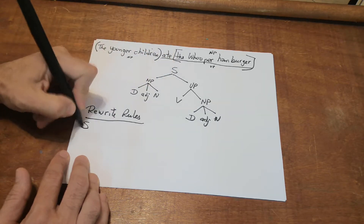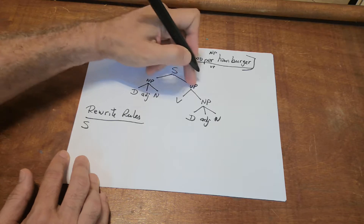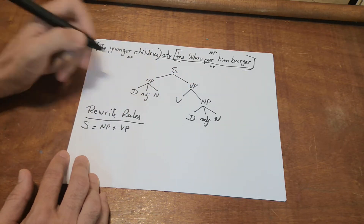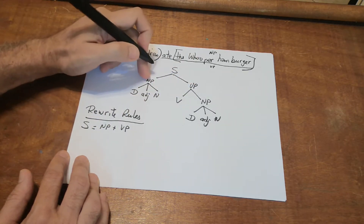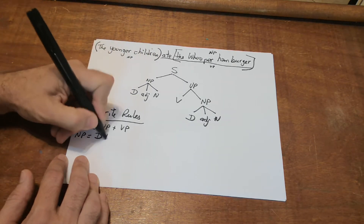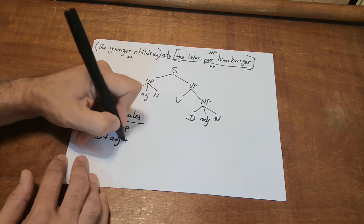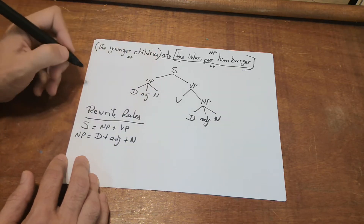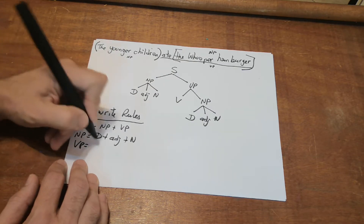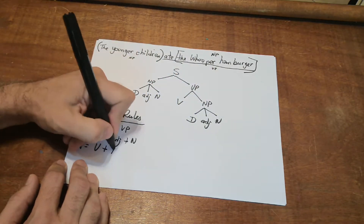Sentence is noun phrase plus verb phrase. The noun phrase is determiner plus adjective plus noun. The verb phrase is a verb plus a noun phrase.